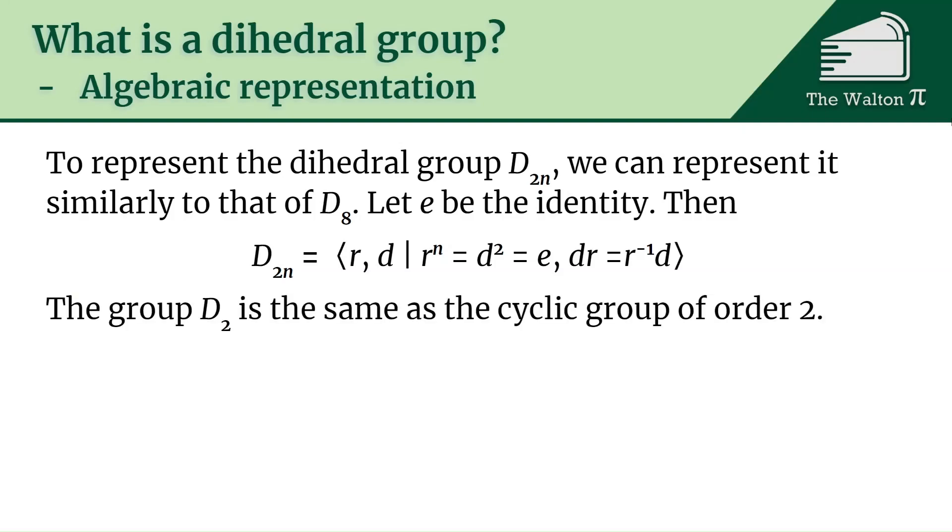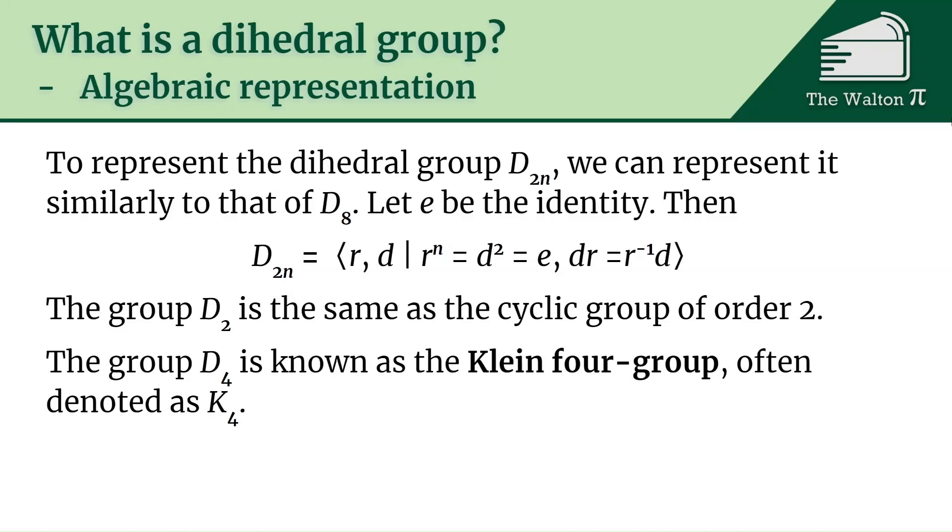What does this mean in terms of other groups? The group D_2, that's going to be the same as the cyclic group of order 2. D_4, that's also known as the Klein 4 group, a fairly famous group, and these are the only two abelian dihedral groups. All other dihedral groups are non-abelian groups.